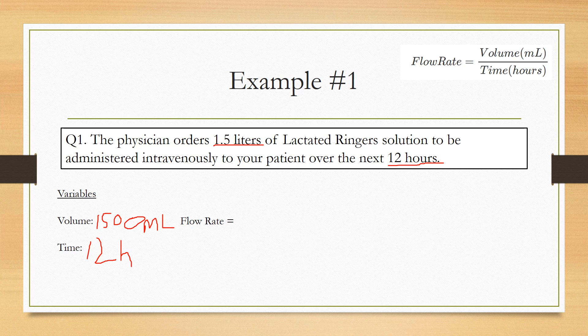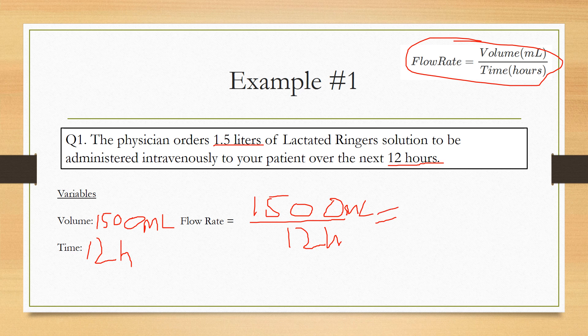It always has to be in hours. So we'll take a look at our flow rate formula over here. Volume in milliliters over time in hours. So we're going to have 1,500 milliliters divided by 12 hours.